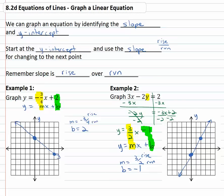This line represents the equation three x minus two y equals two and all the solutions therein. To graph a line we simply identify the slope and y-intercept. We might have to solve for y first, start at the y-intercept and use the slope to find the next point, rise over run.